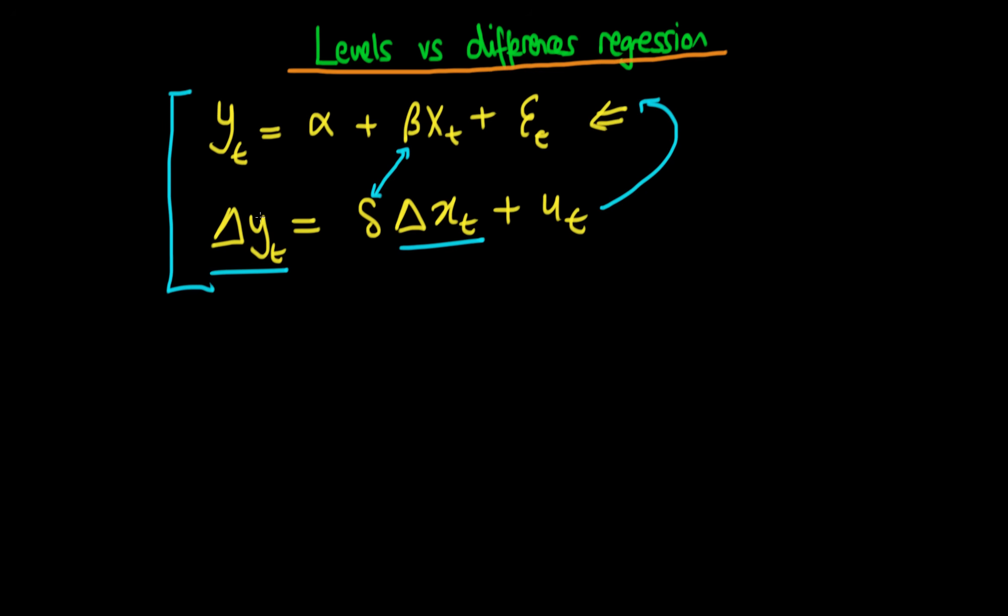It is often thought to be the case that this necessarily implies this. In other words, if we find that there is some sort of relationship in first differences, that it necessarily implies a relationship in levels. That's not necessarily the case.